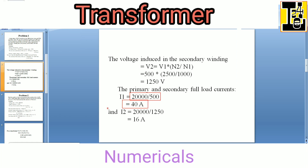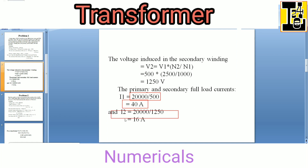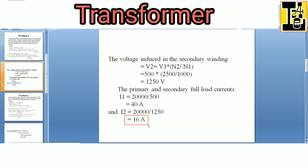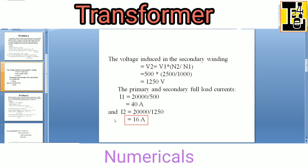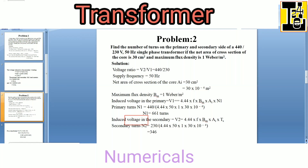I2, the secondary full load current, is equals to full load kVA divided by secondary voltage, which gives 16 ampere. So this is the solution for problem number one. Let us go through another problem.